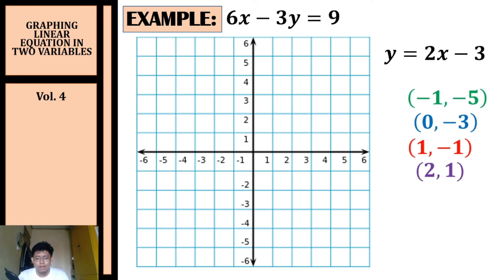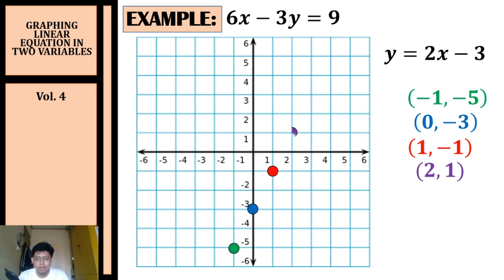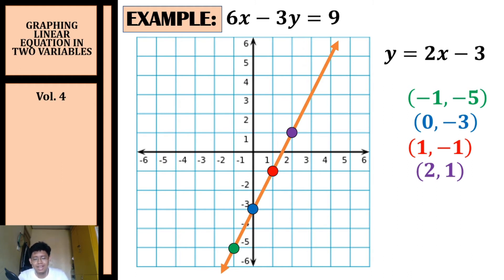We plot (−1, −5) in the third quadrant, (0, −3) on the y-axis, (1, −1) in quadrant four, and (2, 1) in quadrant one. Connecting the four points forms a line — that's the graph of six x minus three y equals nine.